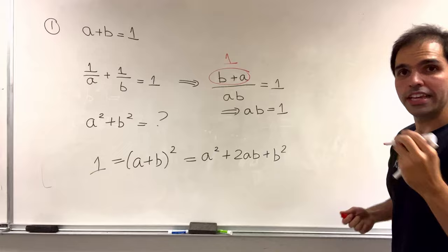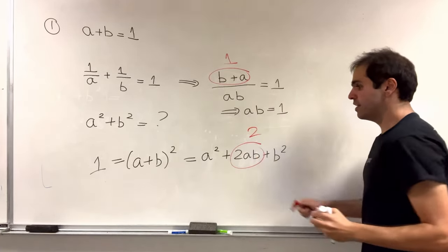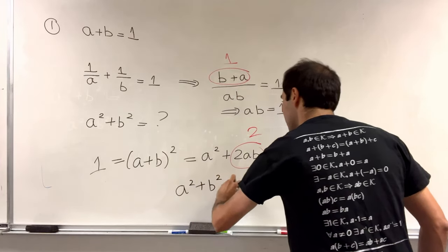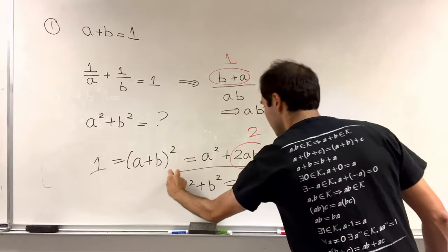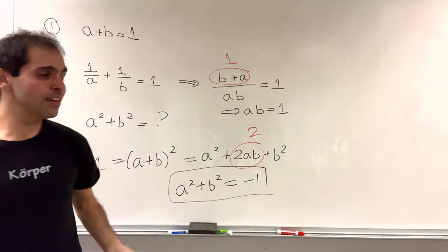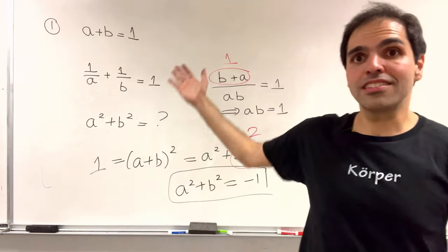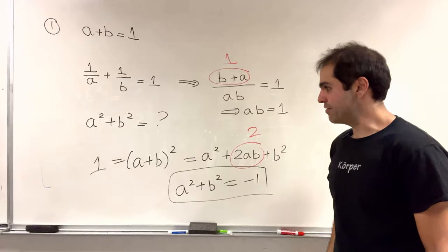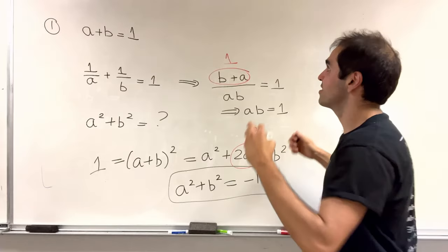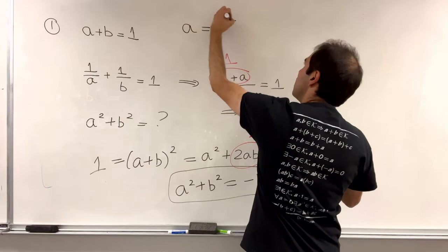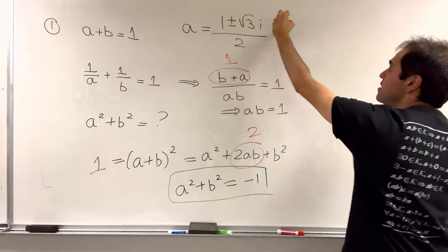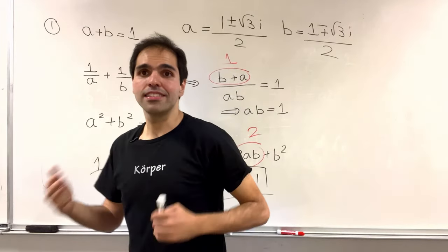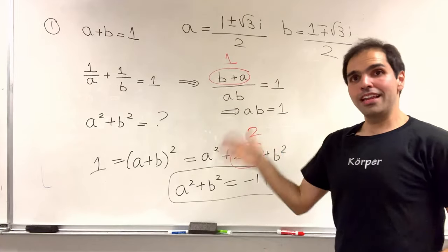Which in turn we can plug into this equation to get 1 is a squared plus b squared plus 2, and so solving for a squared plus b squared, this gives you 1 minus 2, which is minus 1. So no, it is not 1, it is minus 1, and more interestingly, it tells us that solutions to those equations cannot be real, because the sum of squares of two real numbers has to be non-negative. And in fact, you can work out those equations and you should get something like a is 1 plus minus square root of 3i over 2, and b is the same thing but minus plus square root of 3i over 2. Basically, e to the i pi over 3 and e to the minus i pi over 3. All right, so we lost this round. Let's see what happens in the next round.